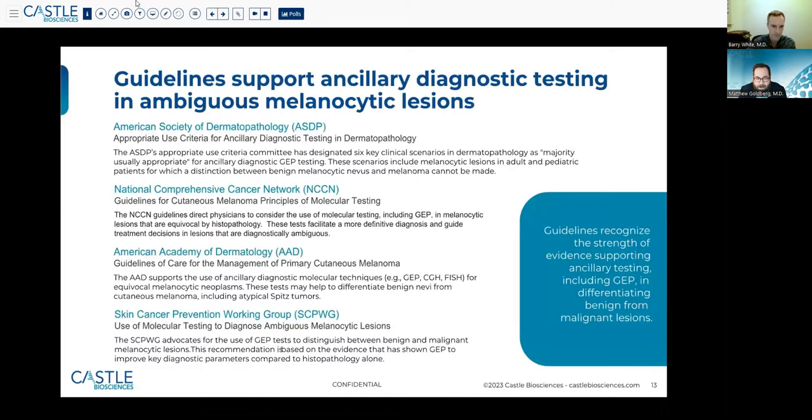On the strength of these data, there's been increasing consensus around the support for diagnostic ancillary testing for ambiguous melanocytic lesions. When an interpreting pathologist or dermatopathologist is unable to distinguish between a benign nevus and a malignant melanoma using the tools that they have at their fingertips, there's understanding that additional ancillary testing can be used to inform the diagnosis. And gene expression profiling is included as one of these options.